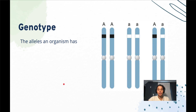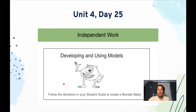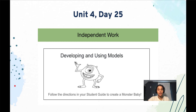Your genotype is a combination of alleles an organism has. Your genotype makes up your phenotype — your genetic information or alleles make up the physical traits or characteristics that you have. In today's lesson, you are going to create a monster baby. The method of creating this monster baby in this video is a little bit different than on your lesson notes, but if you follow along closely, you will be able to create the monster baby just fine.